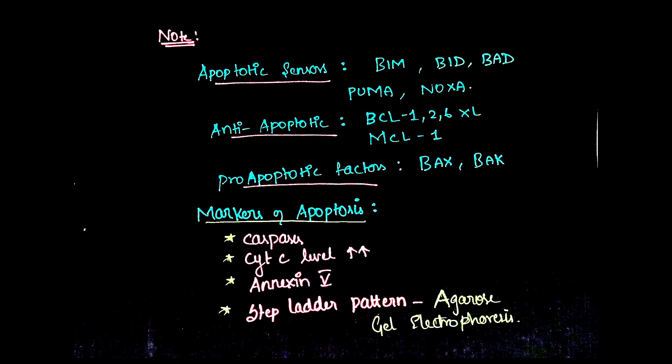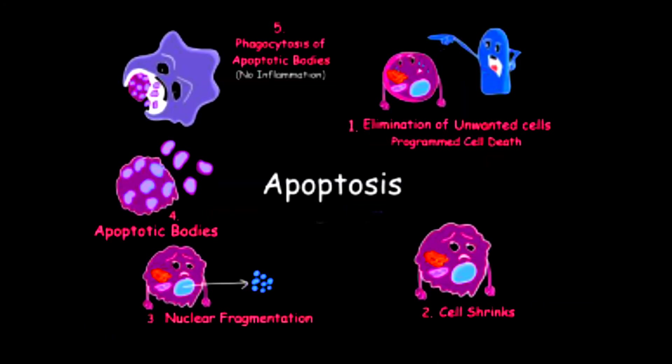Summary of apoptosis: the first step is elimination of unwanted cells, i.e., programmed cell death; second is cell shrinkage; third is nuclear fragmentation; fourth is formation of apoptotic bodies; and fifth is phagocytosis of apoptotic bodies without inflammation.